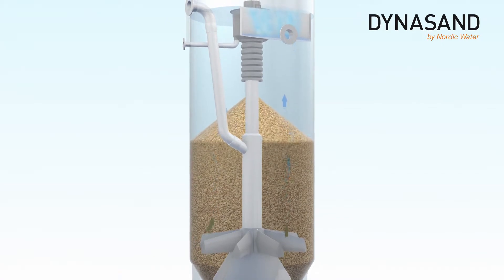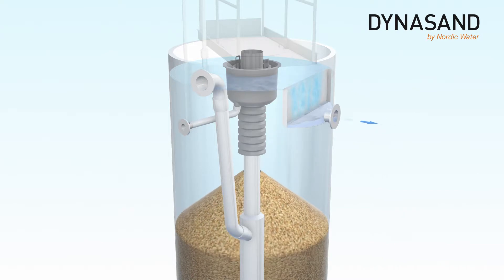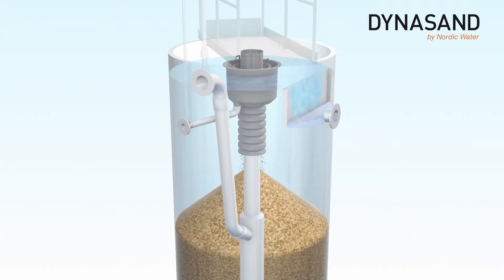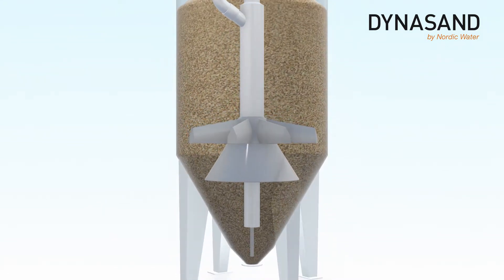The filtered water passes over the overflow weir and is led away through the outlet pipe. The Dynasand filter employs a continuous and uninterrupted filtration process.